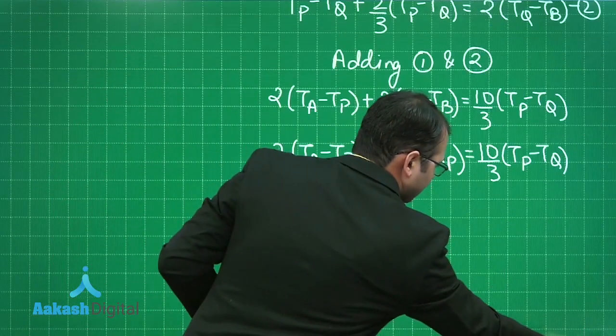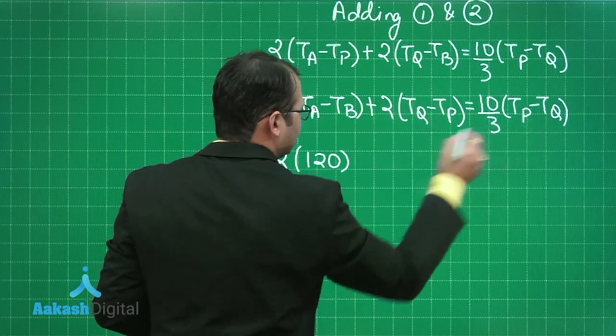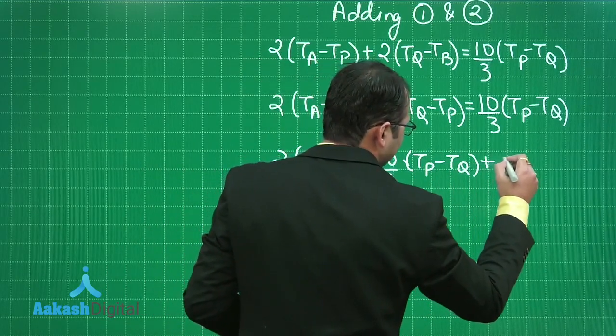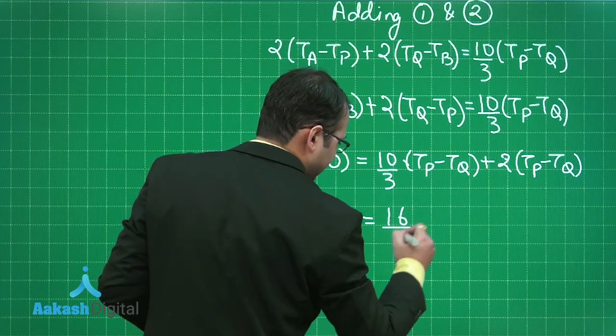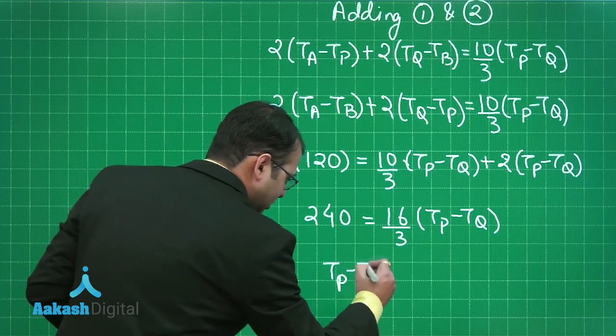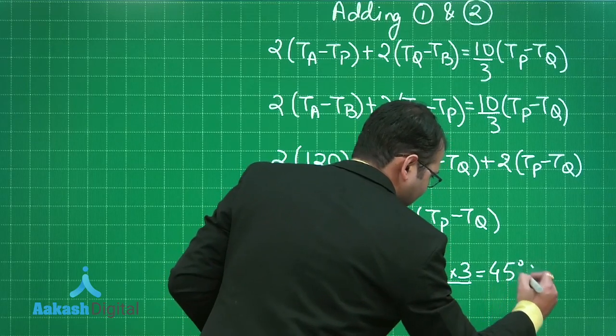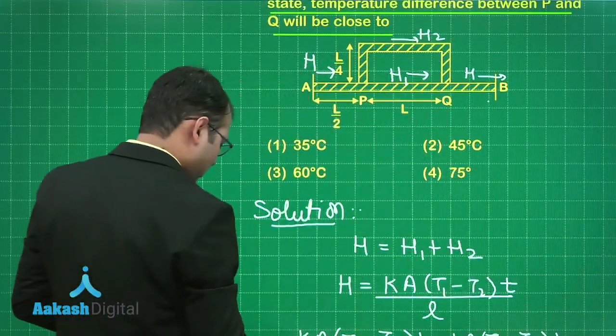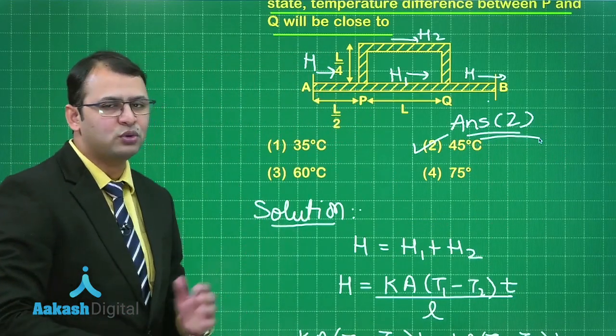Now from here, what we have to do is, this value, this is given as 120 degree, this can be shifted that side and it will become 10 by 3 into (TP minus TQ) plus 2(TP minus TQ). On solving further, you will get this as 16 by 3 (TP minus TQ) and this you will solve, it would be 240. So further, you will get (TP minus TQ) as 240 into 3 by 16. Solving this, you will get 45 degrees centigrade. So the difference between the temperatures of P and Q would be simply 45 degrees centigrade. Let's see which is the best suited option for same. As you can see option 2 will be the answer to this question. Hope you have understood this one. Let's move forward for question number 5.